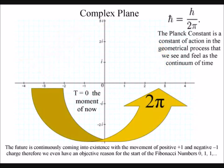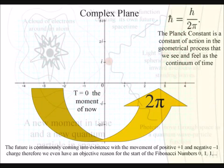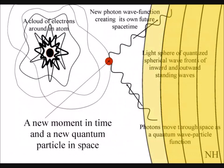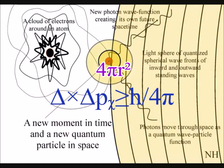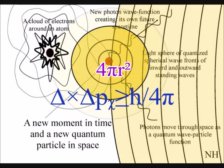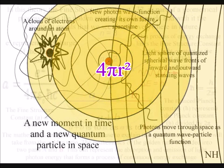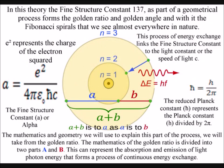The dynamic part of this process is divided into two parts, in the form of the absorption and emission of light. The mathematics and geometry we will use to explain this part of the process, we will take from the golden ratio.